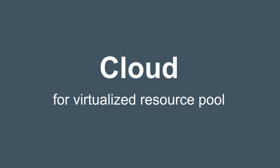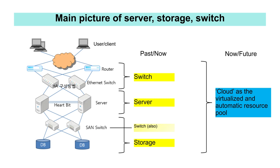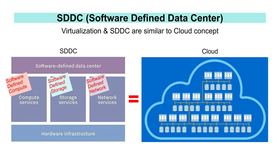Next is the cloud. It is easiest to understand the cloud if you think of it as a virtualized resource pool — resources referring to IT resources such as servers and storage. When servers, storage, and switches are virtualized and operate as a single resource pool, this is cloudized. Because the cloud is closely related to virtualization, it is also consistent with the concept of SDDC.